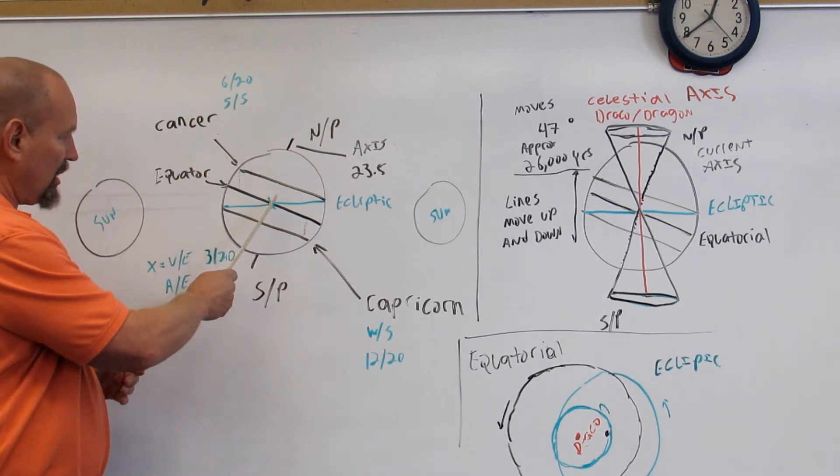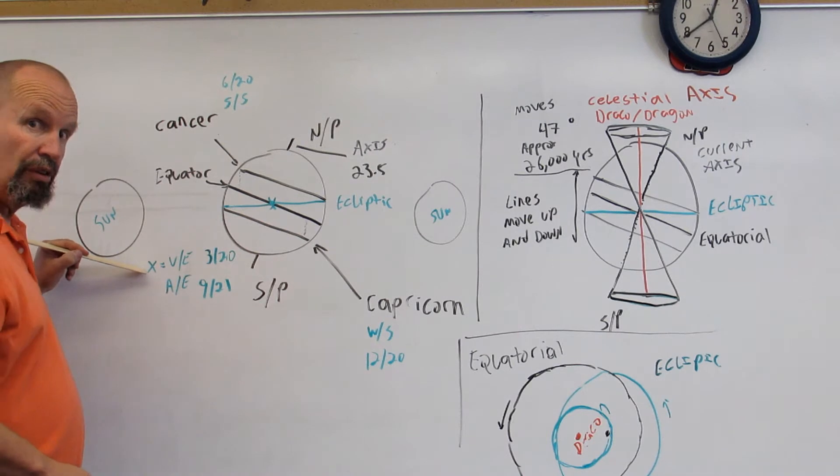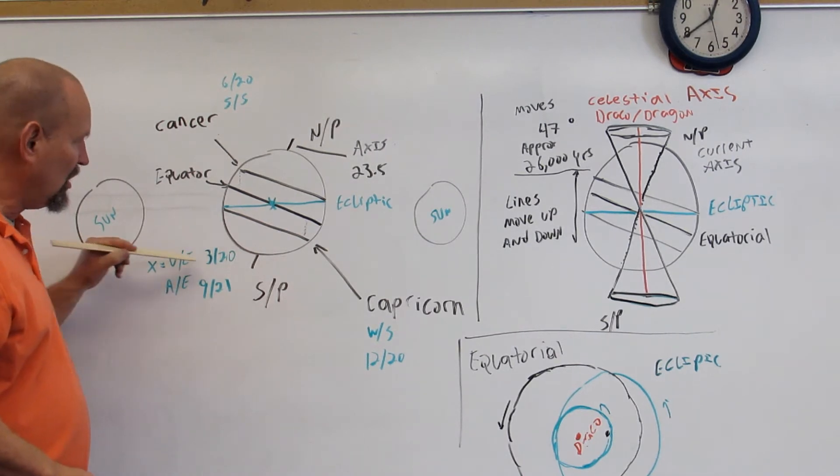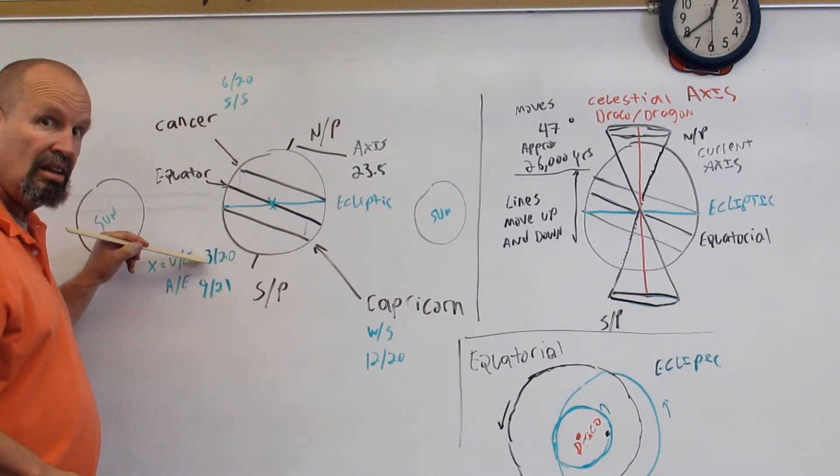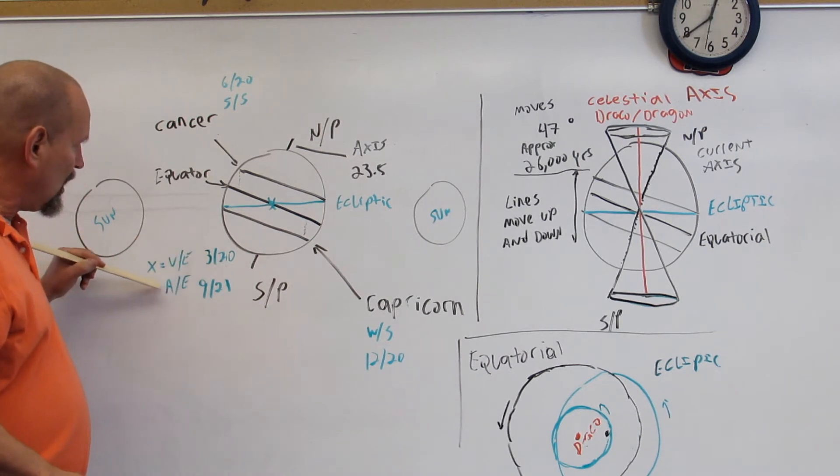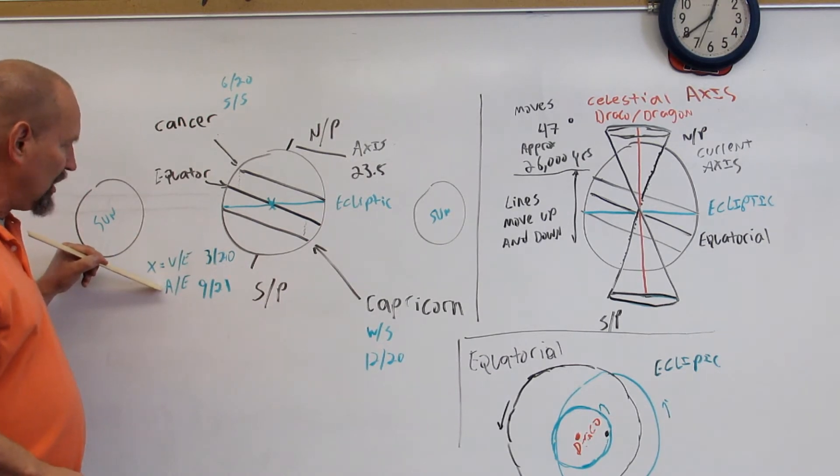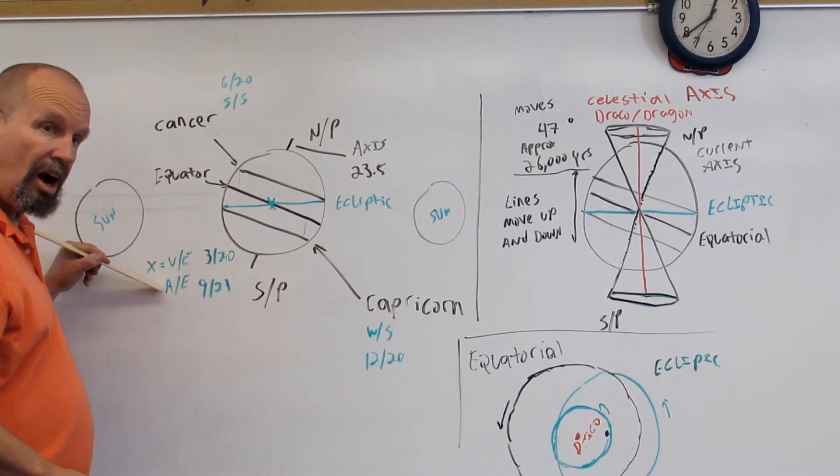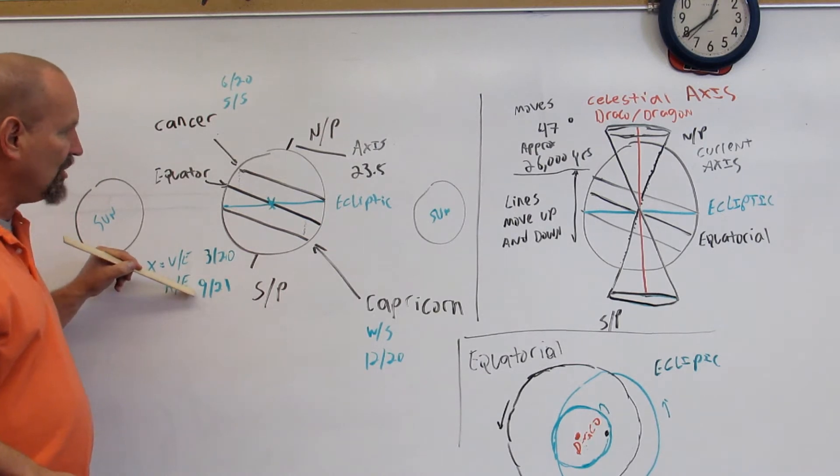This X right here represents what we call the vernal or the spring equinox on March 20th, 320. It also represents the fall equinox or the autumn equinox on 921.